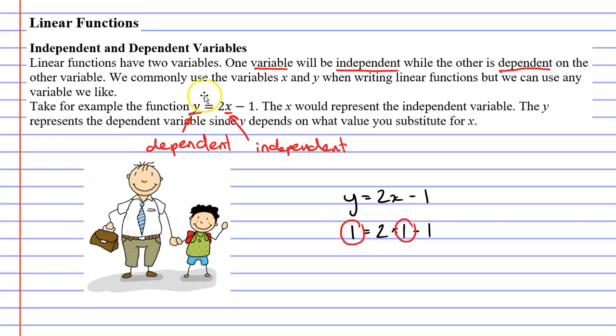You could have a, b, c, any other pronumeral here. So how do we know which one's dependent and which one's independent? Well, sometimes you've really got to read the question and think to yourself which variable depends on the other.